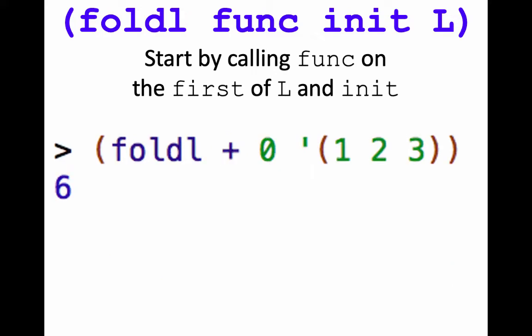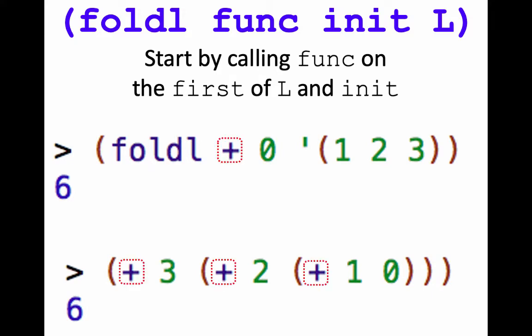Okay, with foldl and the same input plus 0 and the list 1, 2, 3, we get the same answer. But the order in which it executes is different. So we have plus 3, plus 2, plus 1, and 0. Again, the plus sign is the function that we passed in.